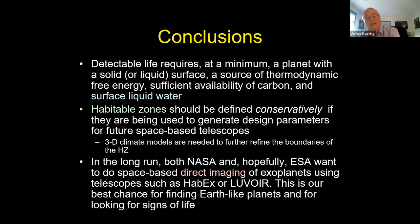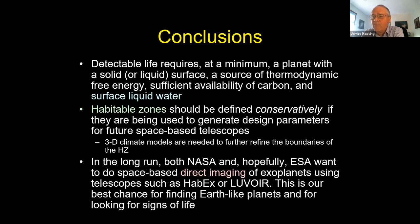Let me leave you with three thoughts. First, detectable life requires at a minimum a planet with a solid or liquid surface, a source of free energy, availability of carbon, and surface liquid water. Second, habitable zones should be defined conservatively when used to generate design parameters for future space telescopes — and both HABEX and LUVOIR have been using our updated habitable zones. Third, in the long run, both NASA and ESA would like to do direct imaging of exoplanets, and I'm hoping the Astronomy and Astrophysics Decadal Survey picks one of them as the next flagship mission. I'll stop there and open it up for questions.